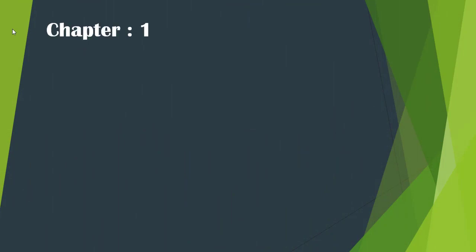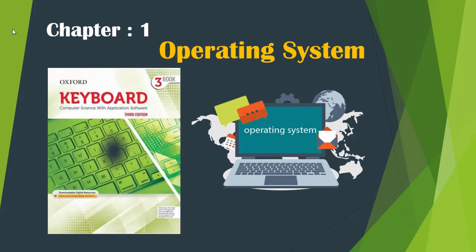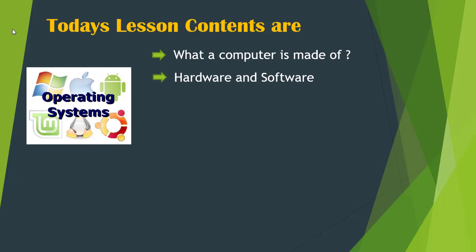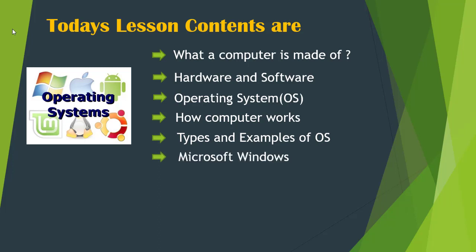Today we will start Chapter 1, Operating System, from your book, Oxford Keyboard Computer Science with Application Software. Today's lesson contents are: What a computer is made of, Hardware and software, Operating System, How a computer works, Types and Examples of Operating System, and Microsoft Windows.